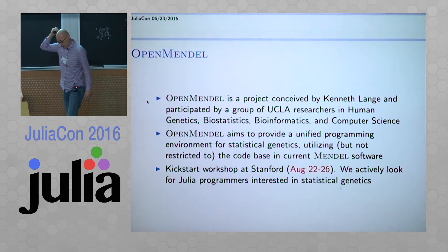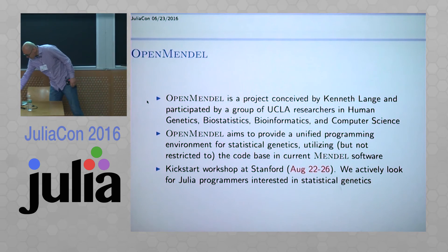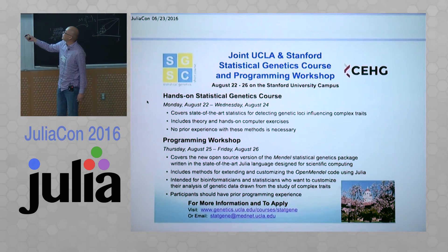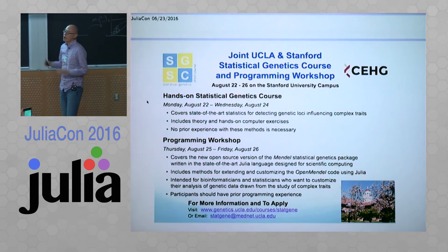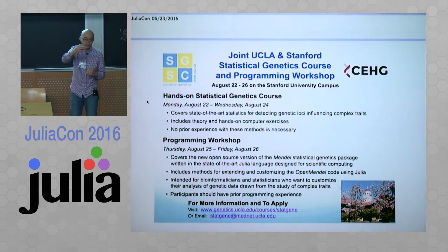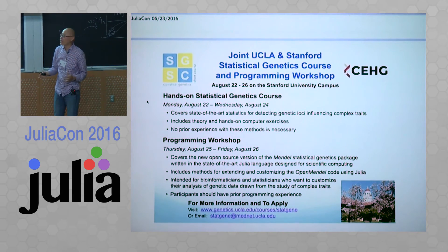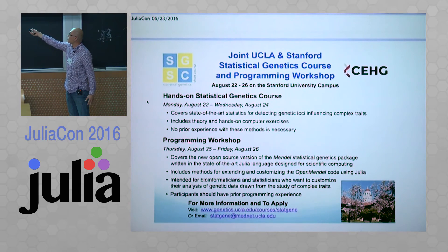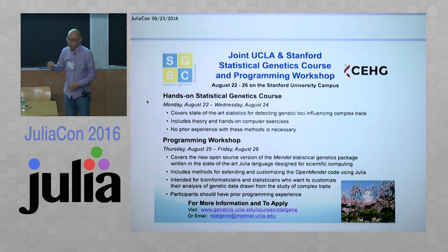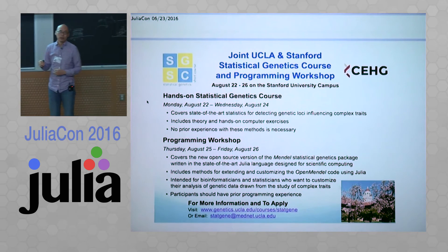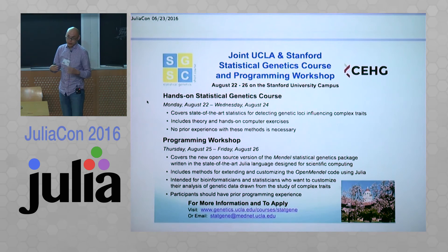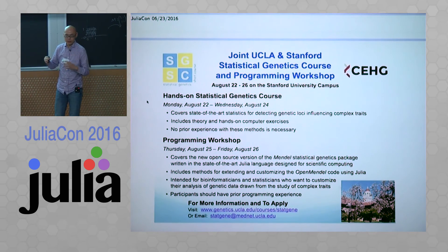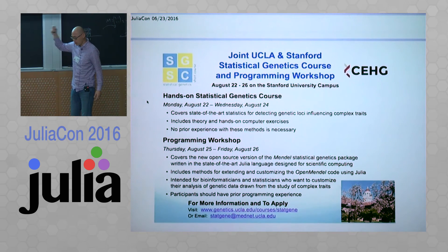We have a kickstart workshop at Stanford this summer - that's probably the most important part. This workshop is the 22nd, joined by UCLA and Stanford. It's in August and there are two parts of the workshop. The first part is more about teaching how to use the traditional, current Fortran-based Mendel - how to use the executable, how to do one of those 29 analysis options. But what I want to advertise here is the second part, which is a programming workshop. It's the last two days of the workshop and really about Open Mendel. So far we have about tens of thousands of lines of Julia code, but they are all in a private repository right now. During this workshop, I really want help from the Julia community on how to better put these things out, keep this open source, and help the community grow.